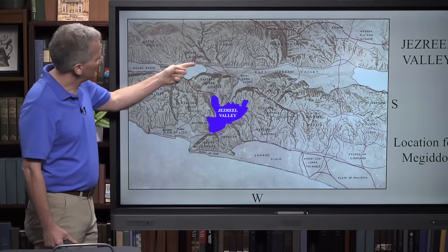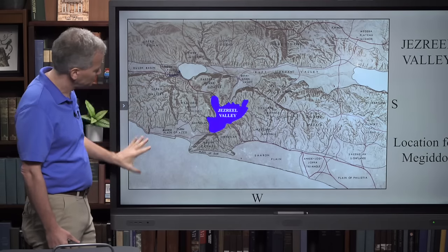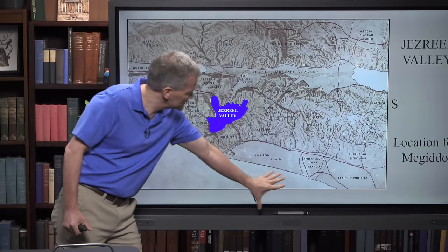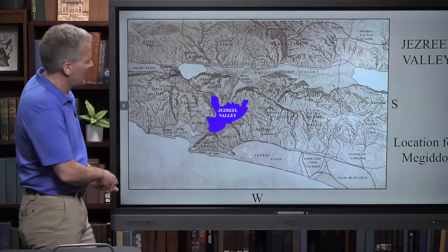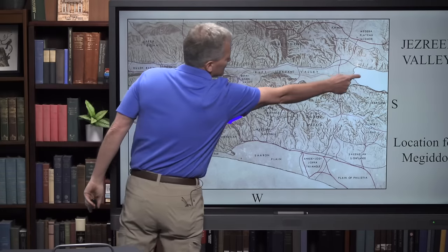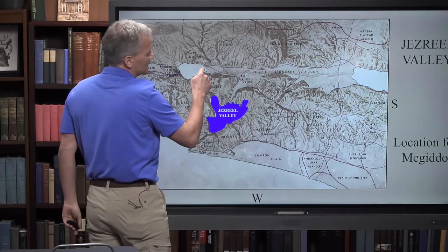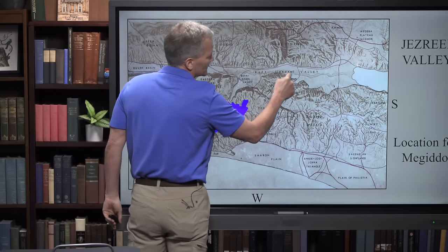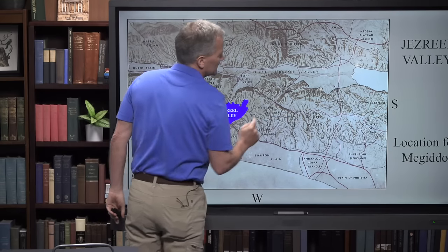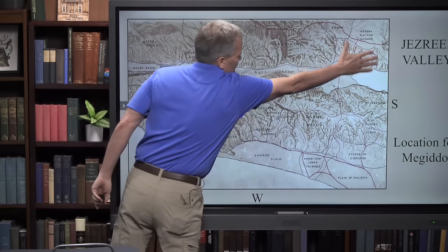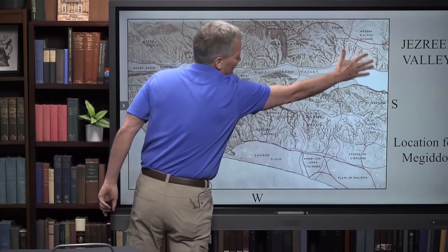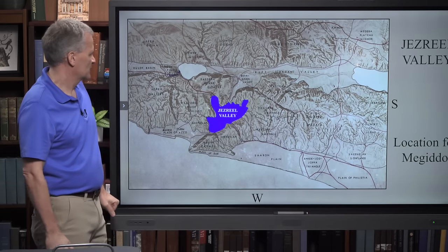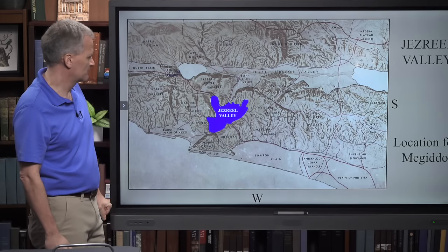On this map we have the Sea of Galilee, the Mediterranean — not marked as such but visible — and the Dead Sea. What connects the Sea of Galilee and the Dead Sea is the Jordan River that flows into it. This area is the lowest point on earth that you can go without being permanently underwater, so it's an extremely hot and arid place.